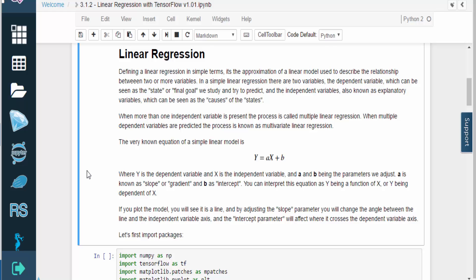When there are multiple independent variables in the model, the process is called multiple linear regression. When there are multiple dependent variables, the process is called multivariate linear regression.